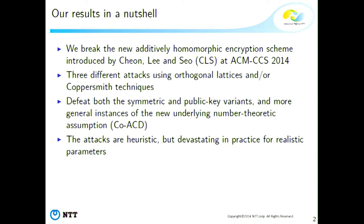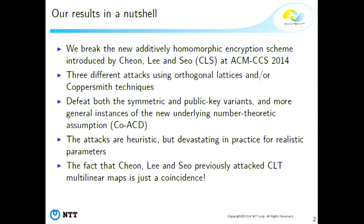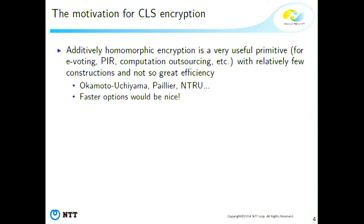This makes the scheme much less interesting than was originally thought. Additively homomorphic encryption is a quite useful primitive, used in many protocols: e-voting, PIR, computation outsourcing, and so on. We don't have so many constructions of it — Paillier, NTRU, and others — but most of them are not so efficient, so having more efficient options would be very nice.